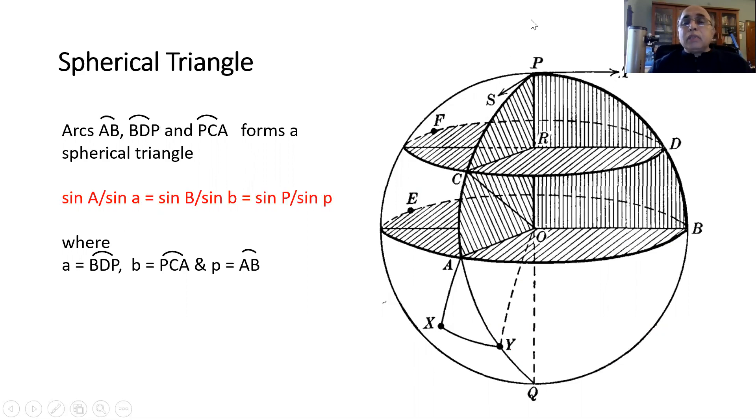If in this picture we have ACP as a great circle, so is BDP, and the angle between these two straight lines at P are the tangents which you draw at PCA at P and PDB at P, and the angle between the tangents would give you the angle at P.